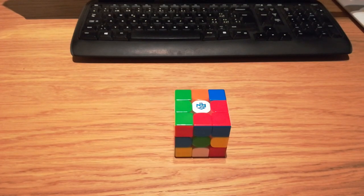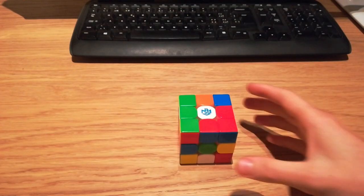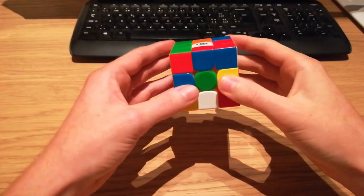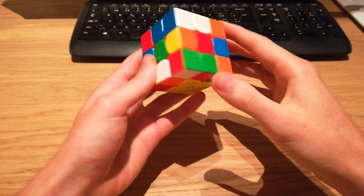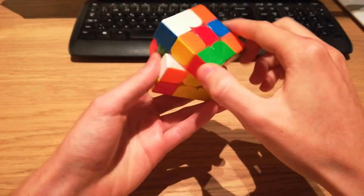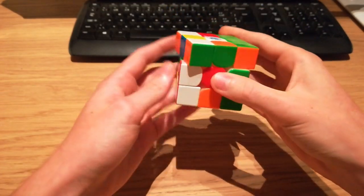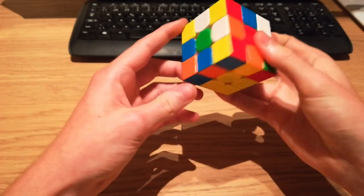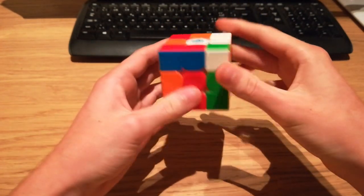In this scramble it just happened so that building the yellow cross and cancelling into pairing up the first pair in this way would give me a very lucky continuation. We'll see what I mean in a second.